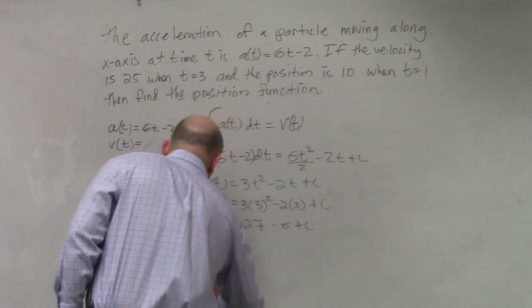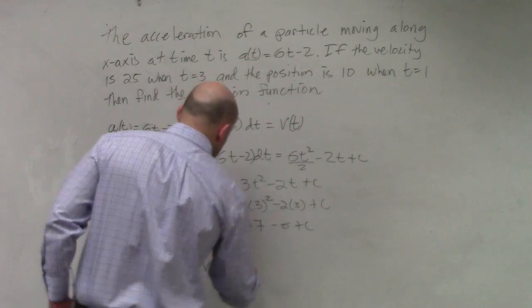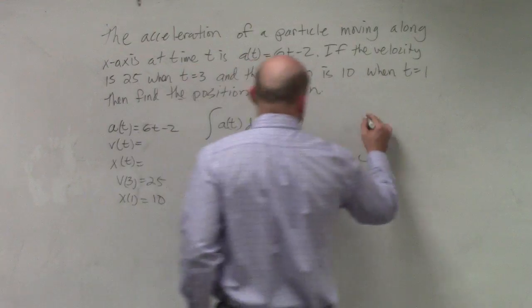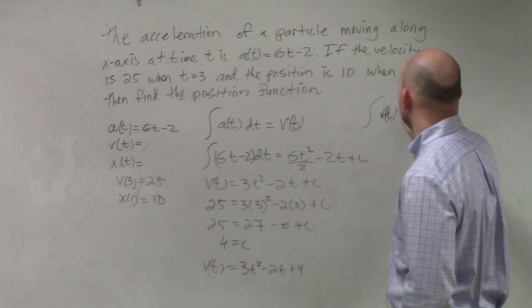So therefore, I can say v sub t equals 3t squared minus 2t plus 4. But again, guys, we're not trying to find v sub t. We're trying to find x of t. So I know if I take the integral